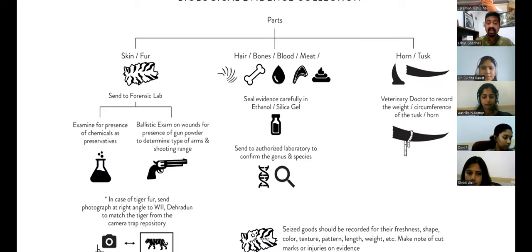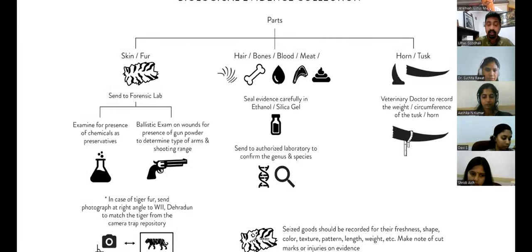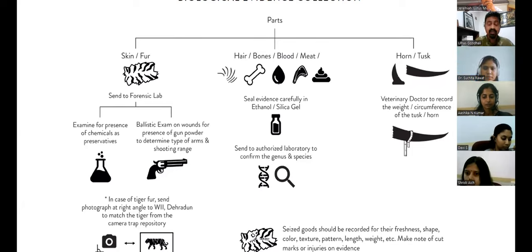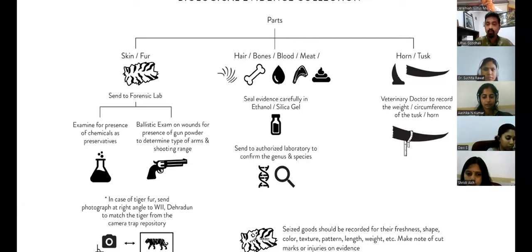The next type of evidence could be horns or tusks, which requires morphological examination and also DNA-based examination. The labs I mentioned cater to these kinds of examinations. So these could be some of the evidences found in parts associated with wildlife investigation, and most questions associated with these evidences can be answered with DNA techniques.